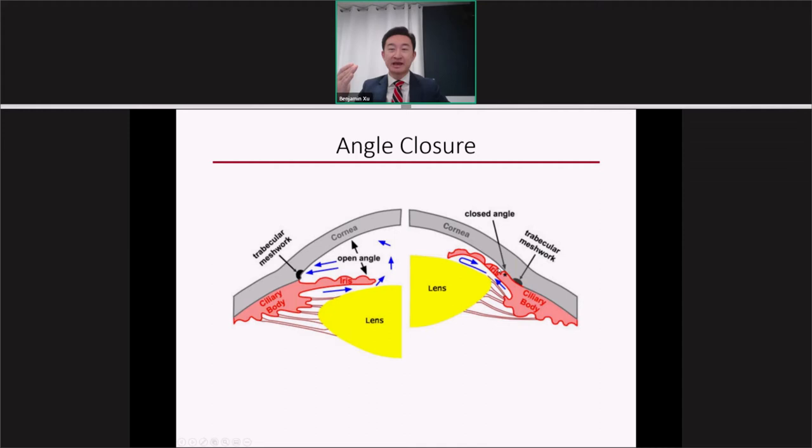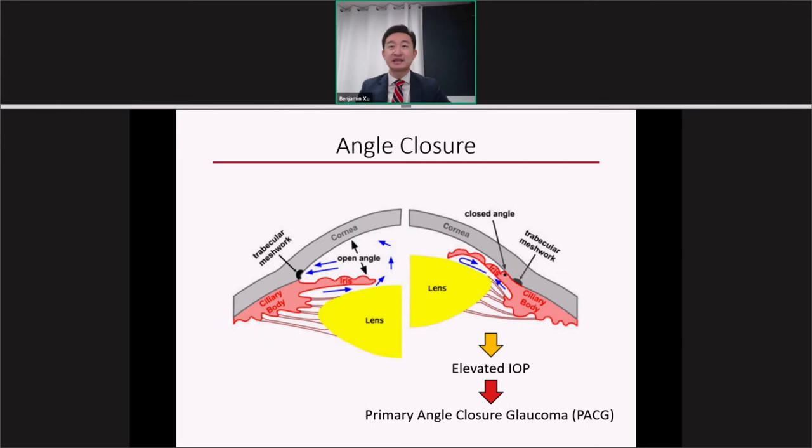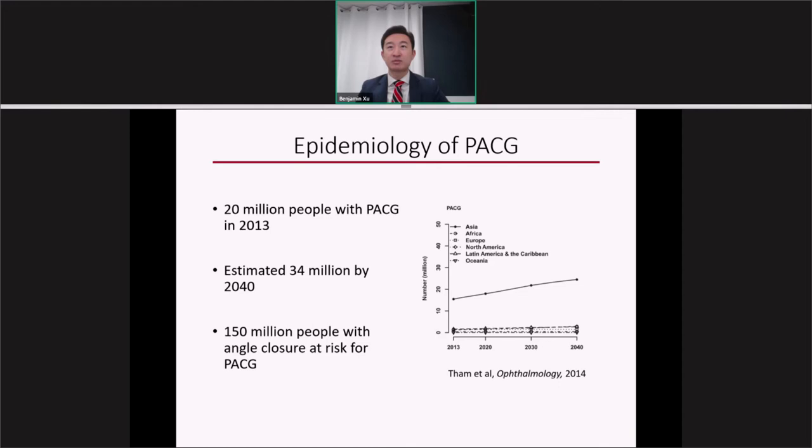In angle closure, the iris is displaced anteriorly and comes into contact with the trabecular meshwork. This impedes the normal flow of aqueous through the trabecular meshwork, and as aqueous builds up inside the eye, there is an elevation of intraocular pressure. Over time, this can lead to primary angle closure glaucoma.